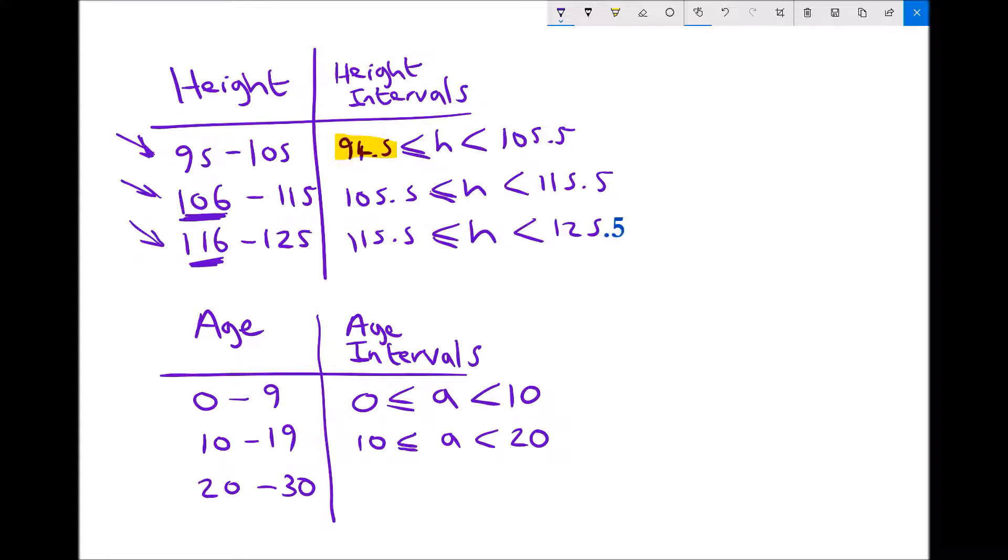They might be 19.99 years old but they'll still sit in that group until the day they turn 20. When they turn 20 they'll drop into our bottom group because our bottom group is for people aged 20 to 30, or 20 all the way up to the day they turn 31.